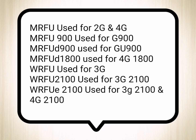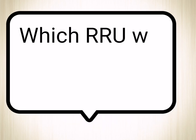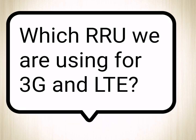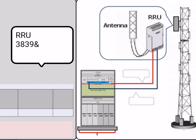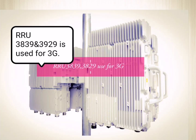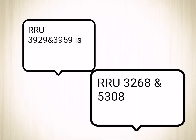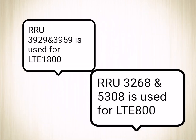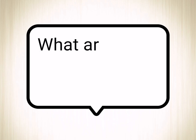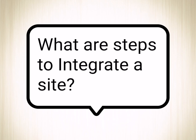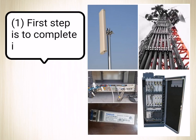Which RRU are we using for 3G and LTE? For 3G, RRU 3839 and 3929 are used. For LTE 800, RRU 3268 and 5308 are used. For LTE 1800, RRU 3959 is used.